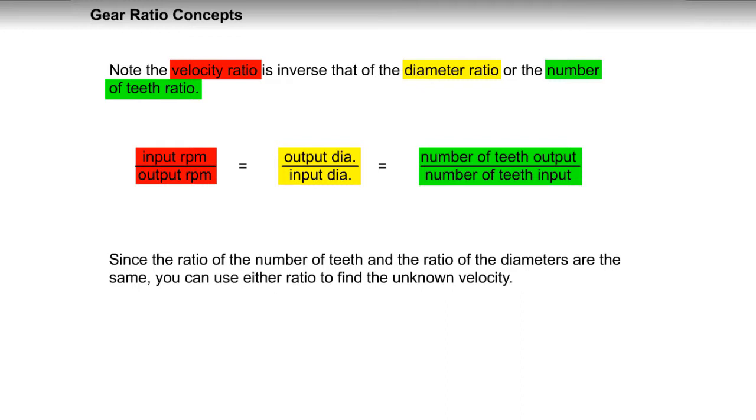Since the ratio of the number of teeth and the ratio of the diameters are the same, you can use either ratio to find the unknown velocity.